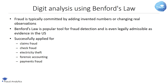Fraudsters typically change the dataset by adding invented numbers or changing real observations, which do not follow Benford's Law. Due to these abnormal duplications and atypical numbers, the dataset no longer conforms to Benford's Law. Hence, Benford's Law is a popular tool for fraud detection, since it identifies deviations that need further review. It is even legally admissible as evidence in the US in criminal cases at the federal, state, and local levels.